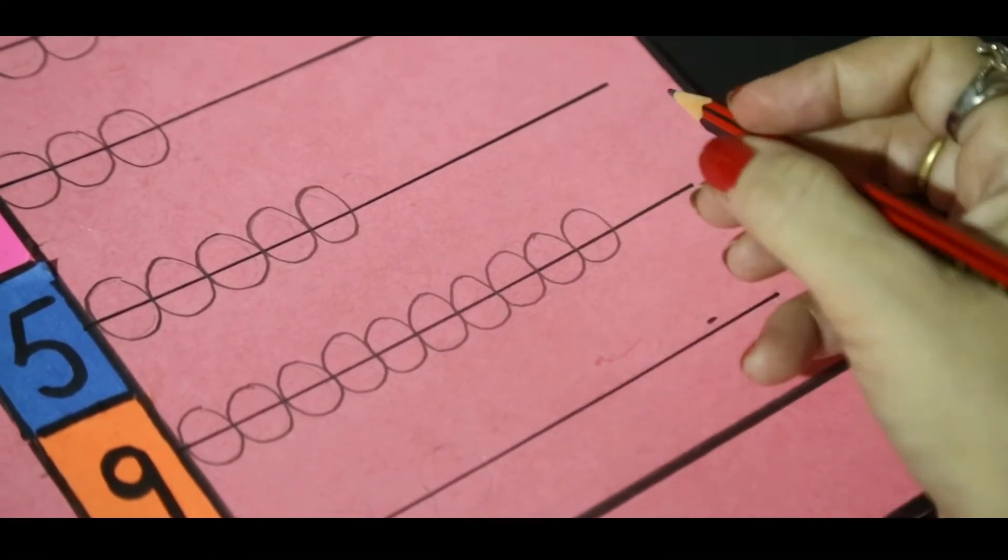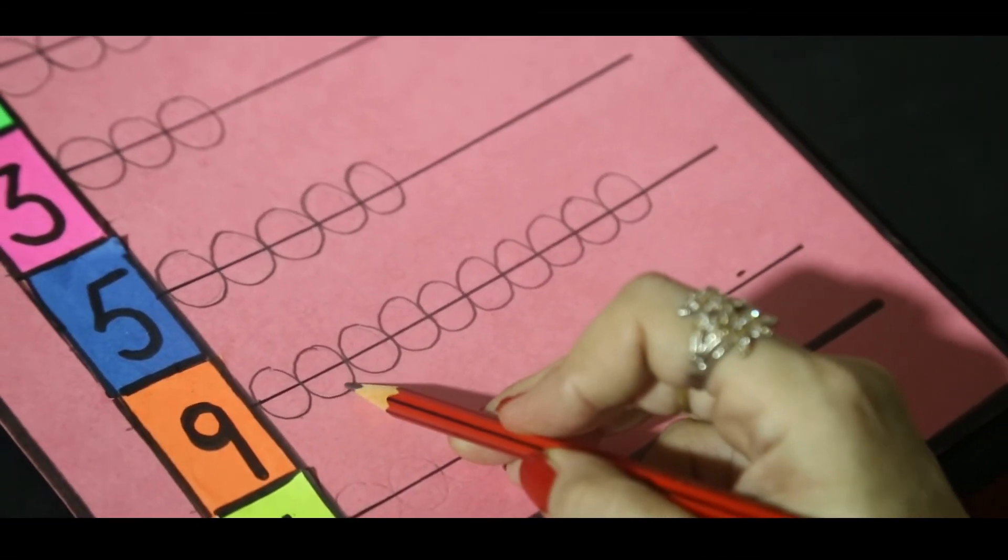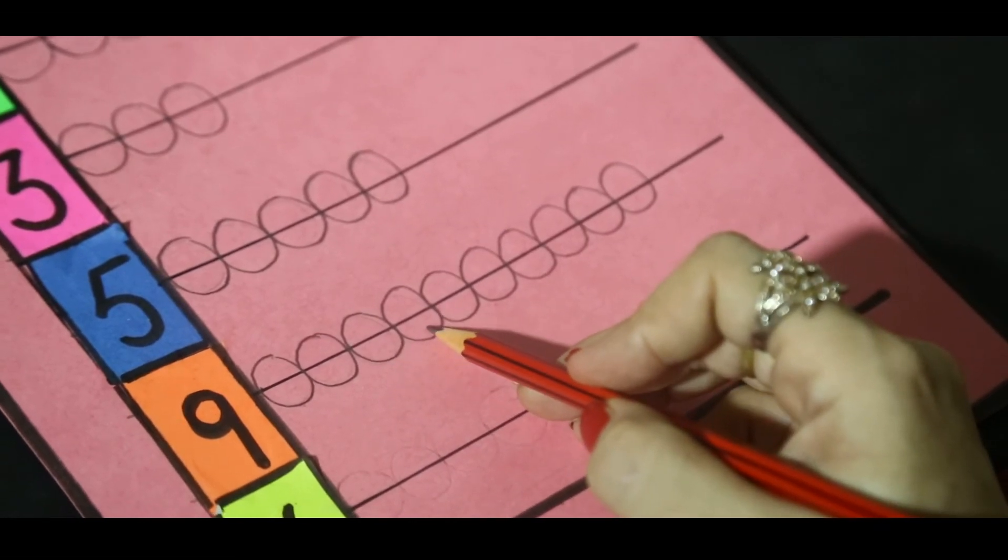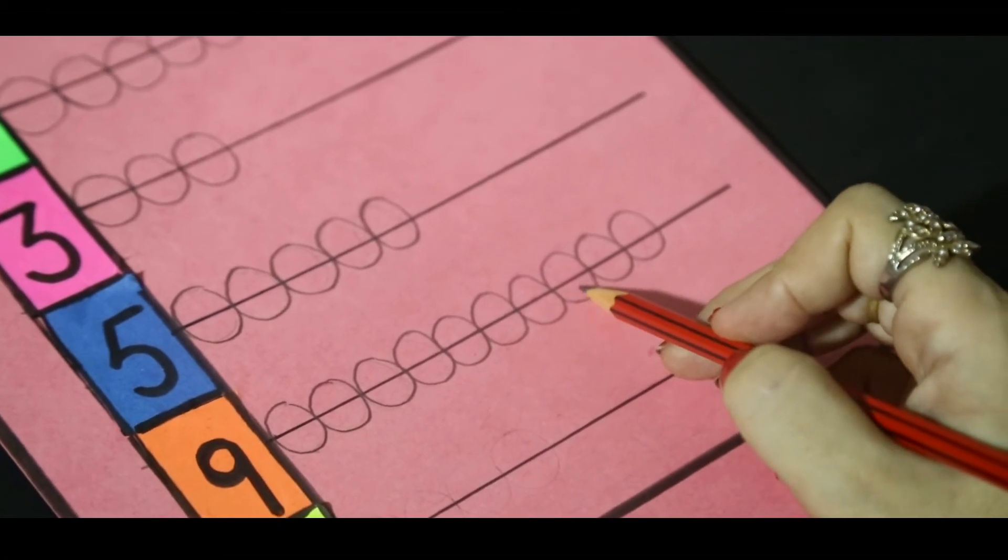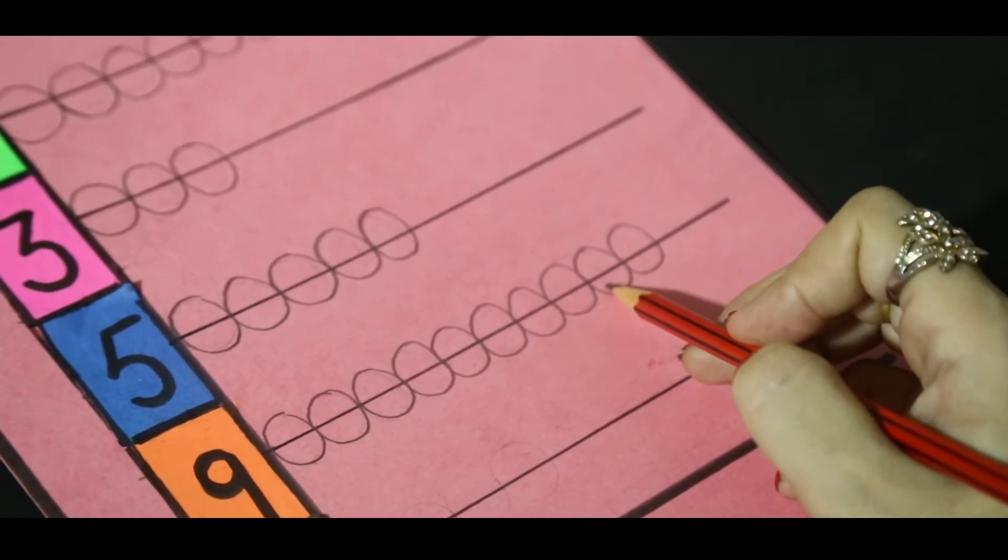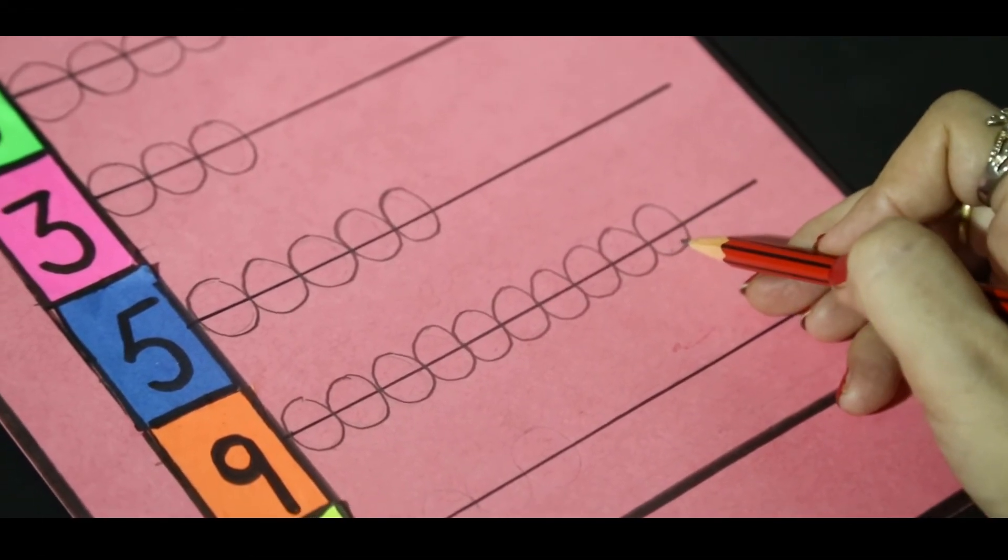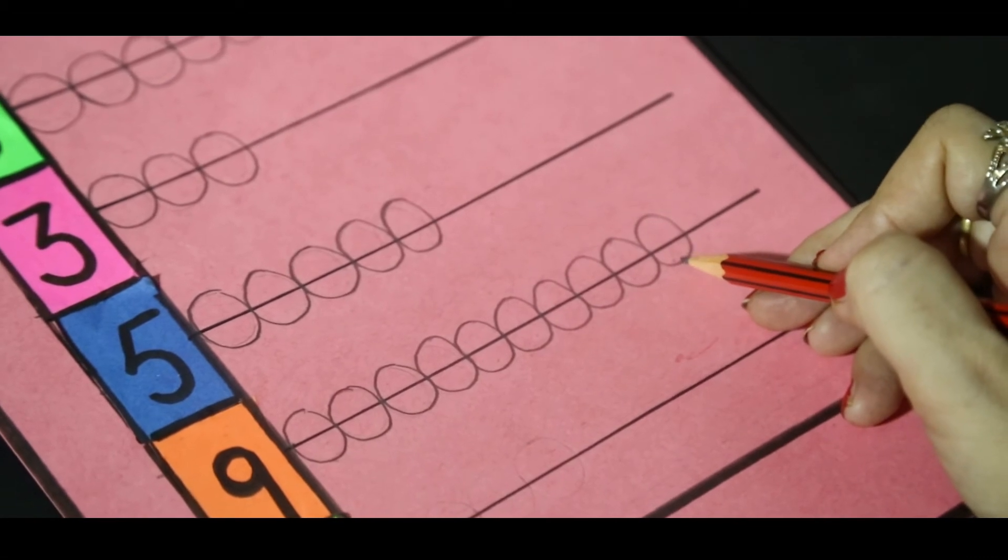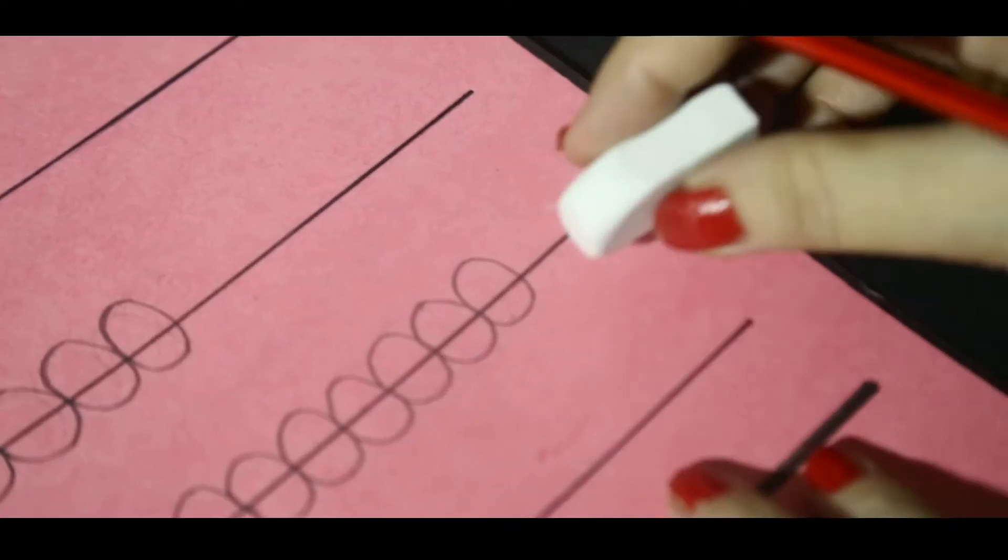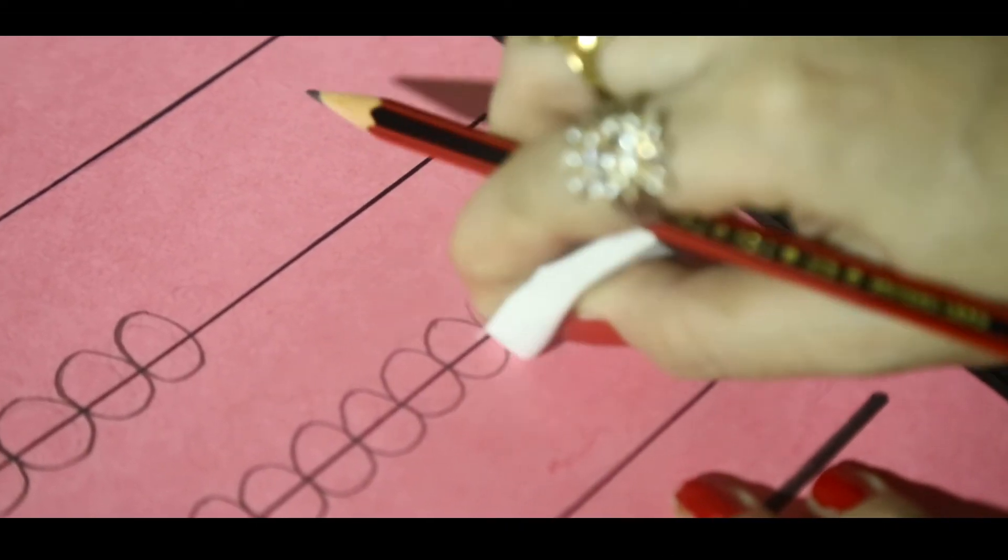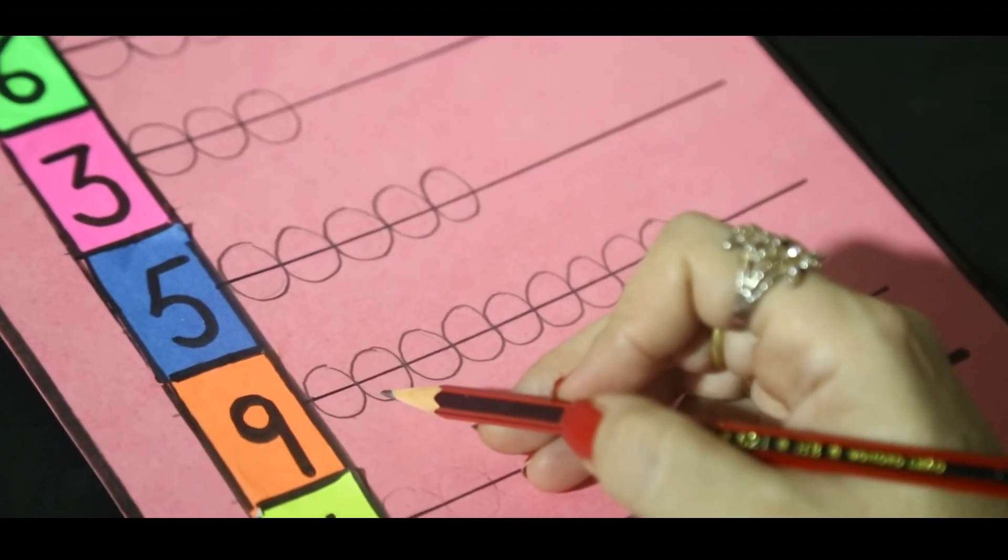Now, I will count the beads. 1, 2, 3, 4, 5, 6, 7, 8, 9, 10, 10. So, I have drawn 1 extra bead by mistake. What I will do? I will erase this.